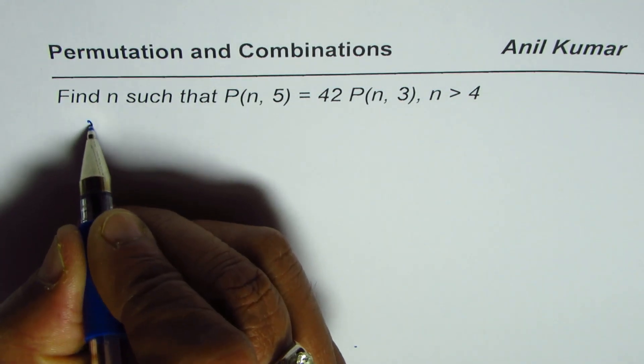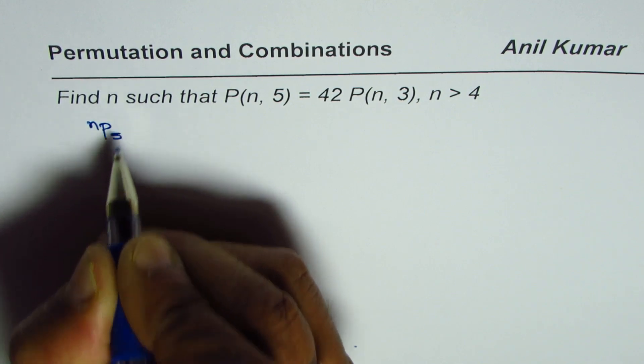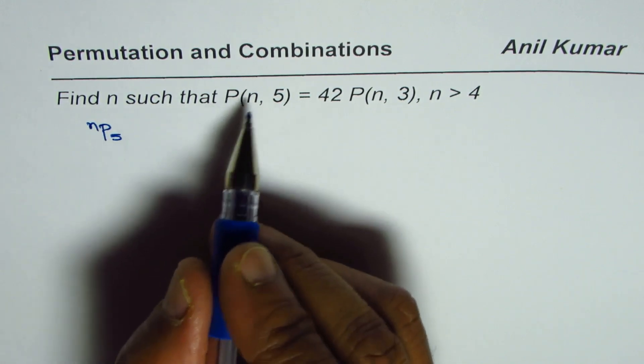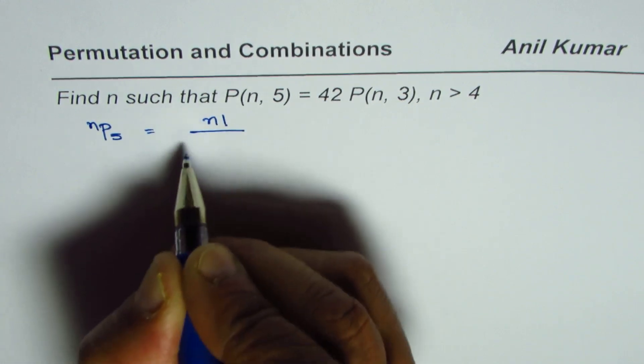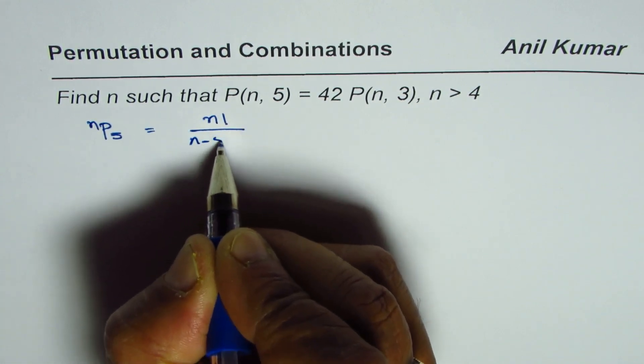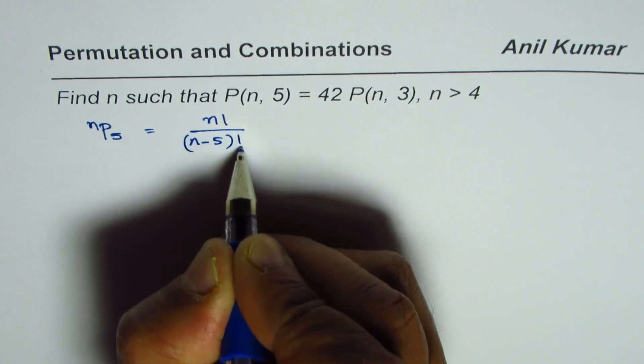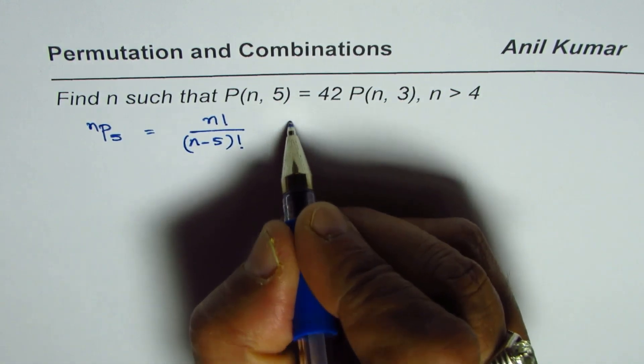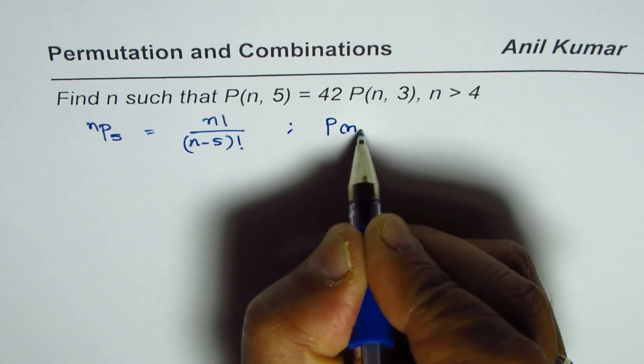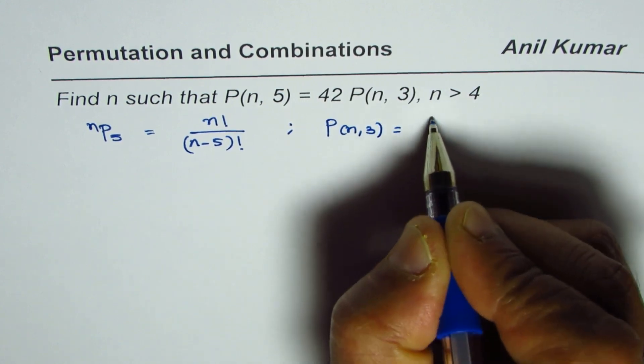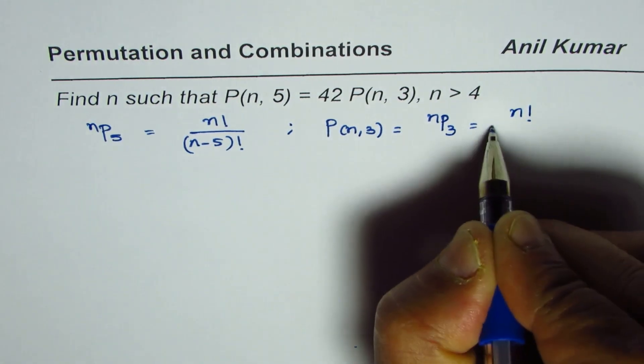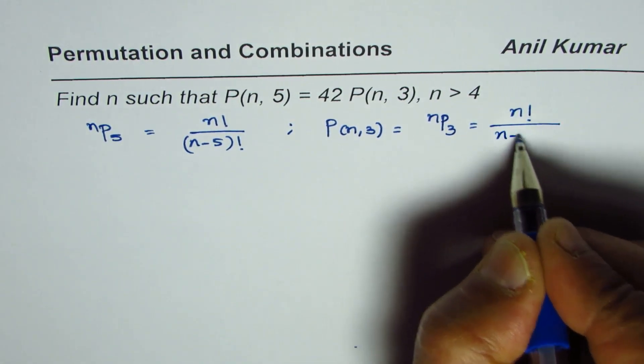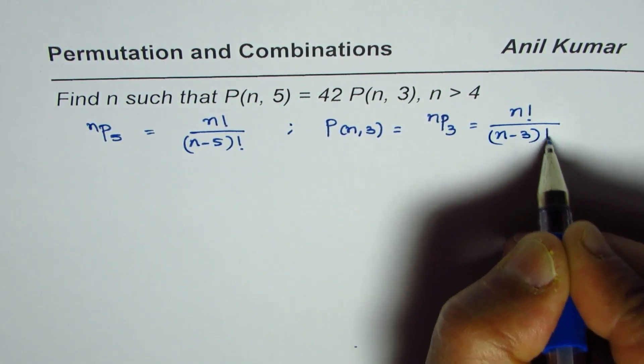Now P(n,5) could also be written as nP5, which really means n factorial divided by (n-5) factorial. Similarly P(n,3) is nP3 which could be written as n factorial divided by (n-3) factorial.